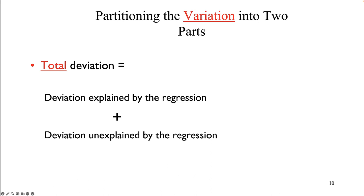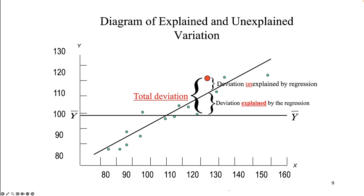Deviations from the expected value can be partitioned into two parts: the deviation explained by the regression (the line of best fit) and the deviation unexplained by regression (the distance from the line of best fit to the actual observation). Total deviation is the distance from y-sub-i (the actual observed value of y) to y-bar (the mean of y, the best guess of what y would be). The goal with regression is to minimize the distance between the observed y-sub-i and the expected line y-hat.